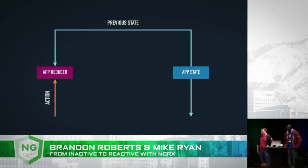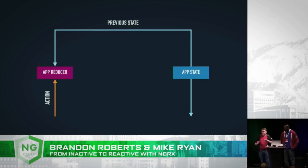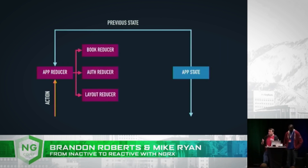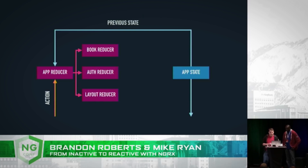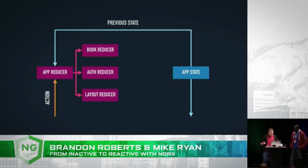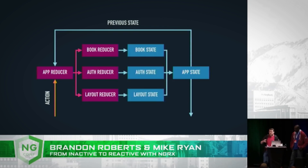We also don't want to write one reducer for our entire application. As we build complex applications, we're going to have a lot of state to manage, and one reducer would get unwieldy quickly. NGRX store abstracts away the application reducer and instead delegates state and actions to child reducers that only work on one piece of state. You can think of these like tables in a database — they're aggregated into one large application state object.